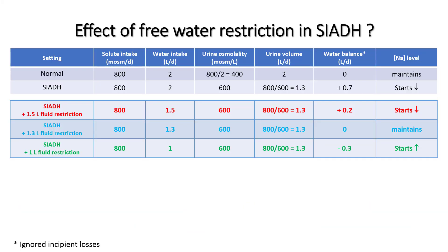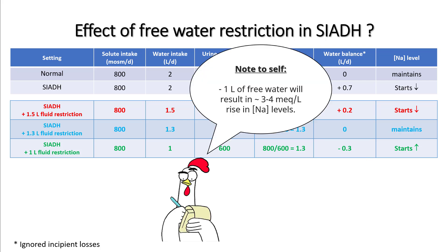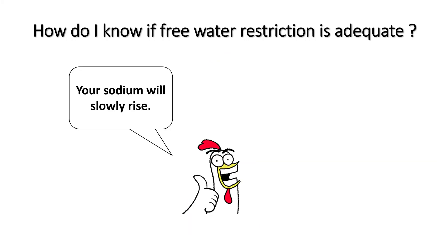If the SIADH patient was taking 2 liters and you place him on 1 liter restriction, he still makes 1.3 liters of urine and remains in a positive fluid balance. Matching restriction to urine output maintains sodium; going lower — for example, 1 liter — creates a negative 0.3 liter daily water balance. A negative 1 liter free water balance per day results in approximately a 3 to 4 mEq/L rise in sodium.